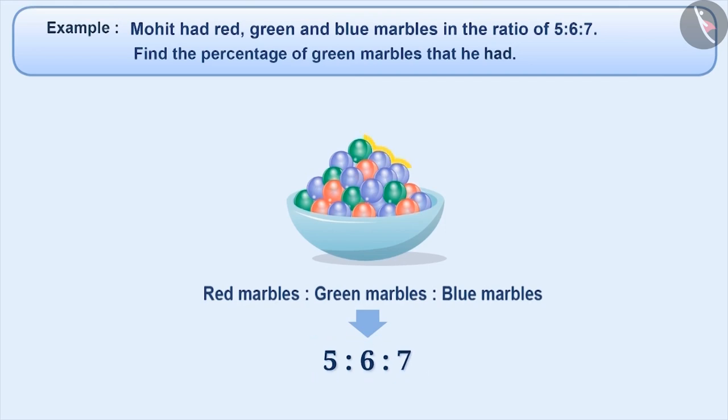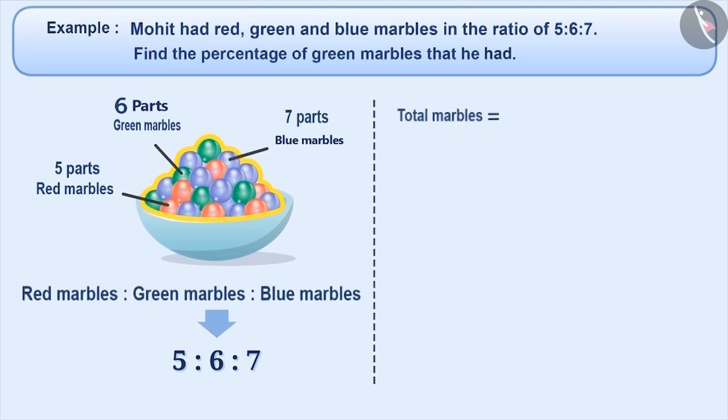Here, we come to know that out of total parts, 5 parts are red, 6 parts are green and 7 parts are blue marbles. We can say that the total marbles he has are 5 plus 6 plus 7, that is, 18 equal parts, out of which green marbles are of 6 parts.